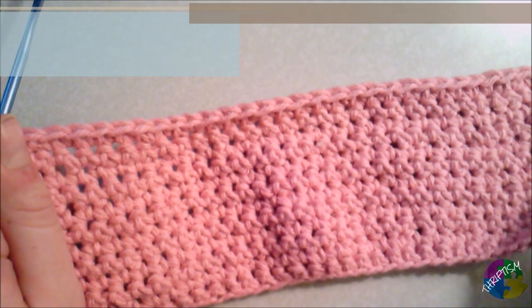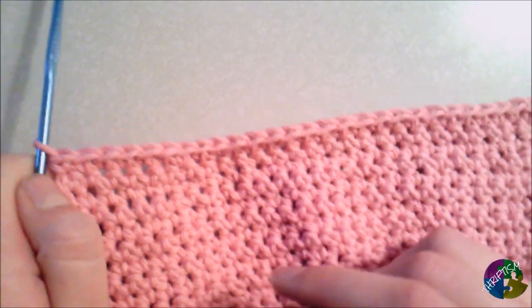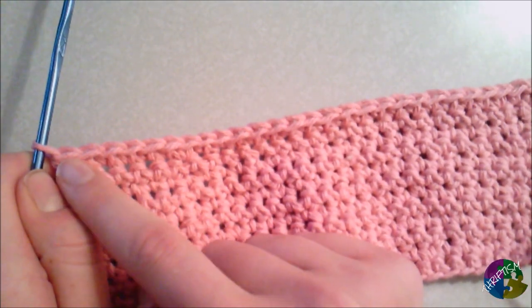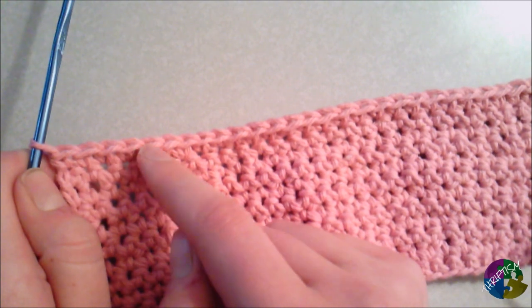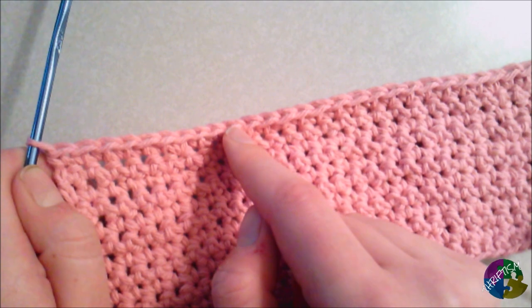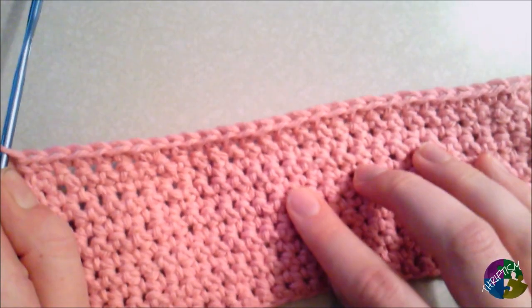So if you ever do lose count of your stitches, you can easily get back on track to count how many you are. You can see there's little loops at the top here, so that's 1, 2, 3, 4, 5, 6, 7, 8, 9, 10. And you can double check all the way to the end, make sure you're still at 30.